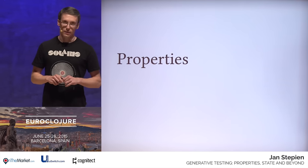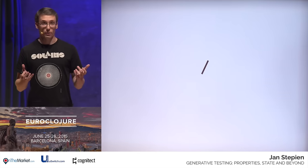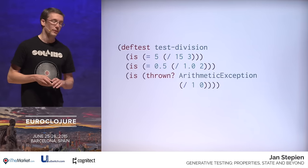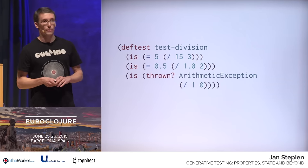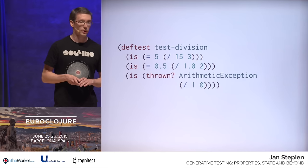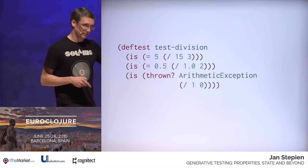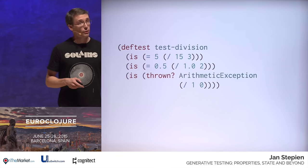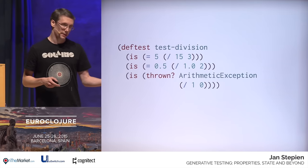Let's start with a very simple example: division. Let's assume we have an arithmetic library we want to test, and we start with the division operator. We could write a Clojure test case which checks whether division of integers works as expected, whether division of double and integer works as expected, and whether an arithmetic exception is thrown when it should be. My question is: is this enough to be sure that our library is properly implemented? If not, how many more tests do we need — 10 more, 100 more, 1,000 more? It's difficult to judge.